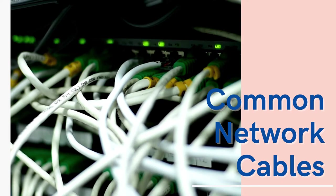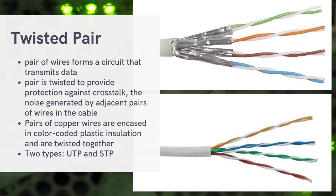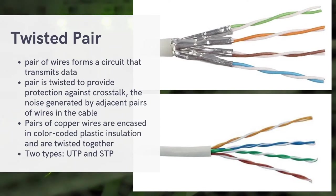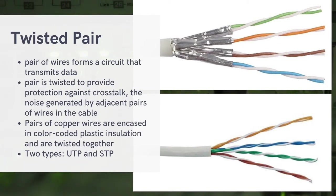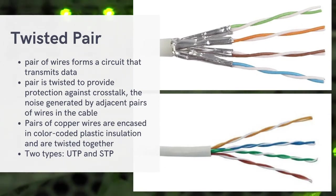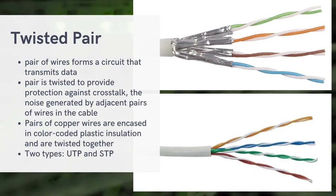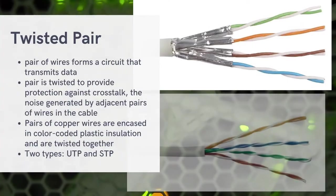The first cable type is the twisted pair. A twisted pair is a pair of wires that forms a circuit which transmits data. The pairs are twisted to provide protection against crosstalk — the noise generated by adjacent pairs of wires in the cable. The wires are twisted to reduce interference, because interference can disrupt data traveling from one computer to another.